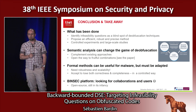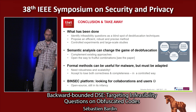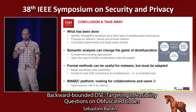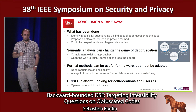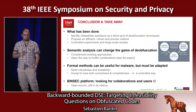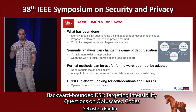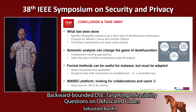In conclusion: we identified the infeasibility question as a blind spot of current automatic deobfuscation techniques. We propose an efficient, robust, and precise method for solving it, along with controlled experiments and large-scale studies. We believe semantic analysis can change the game in deobfuscation, complementing existing approaches and opening the way to fruitful combinations of static, dynamic, and symbolic analysis. Formal methods can be useful for malware analysis — though they must be strongly adapted for robustness and scalability. In our case, we achieve this by accepting to lose both correctness and completeness, but in a very controlled way. Results are implemented in the BinSec platform; we are looking for collaboration and users.